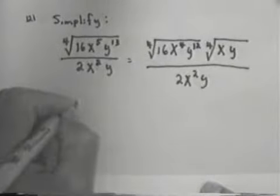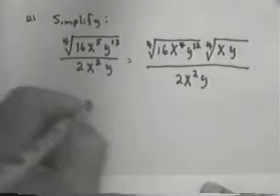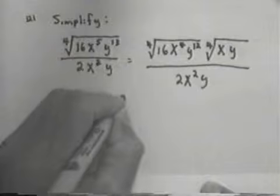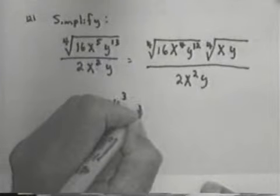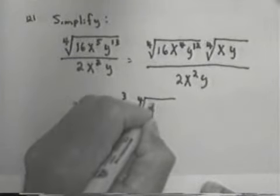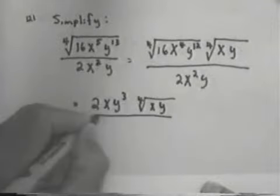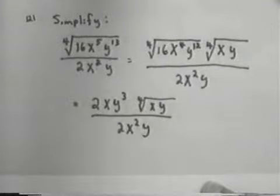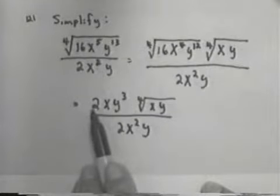Now I can take the 4th root of this. So that would be 2xy cubed times the 4th root of xy divided by 2x squared y. The 4th root of the 16 is 2.